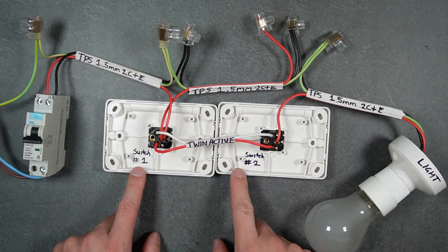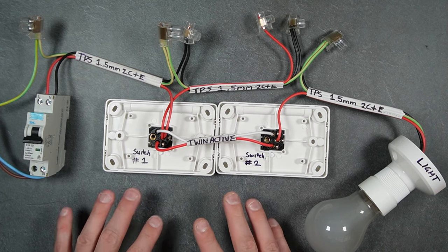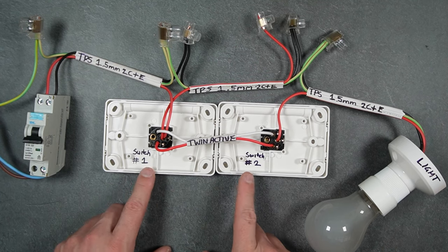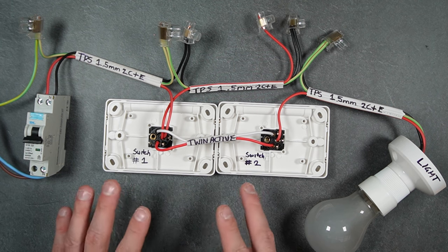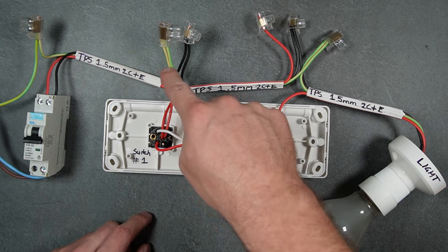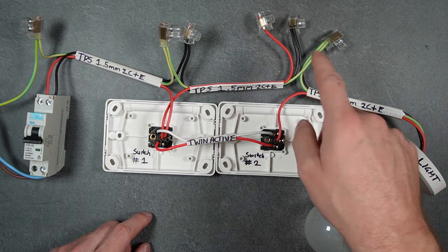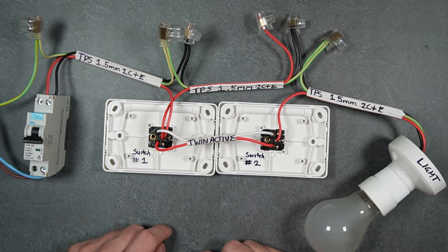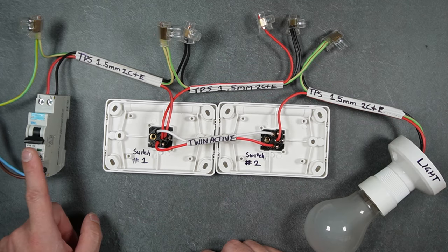and switch number two. If the house is looped at the switch like this installation, that means you have an active, neutral, and earth at each switch, and always have power here until it's turned off at your switchboard.